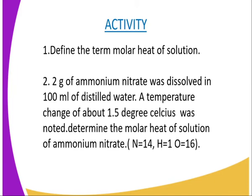So how can we check whether we have got the concept? We do that by answering the following questions. You are supposed to be able to define the term molar heat of solution. Then, from the illustration, work out this example: 2 grams of ammonium nitrate was dissolved in 100 mils of water, and a temperature change of 1.5 degrees Celsius was noted. Determine the molar heat of solution of ammonium nitrate. Given that the relative atomic mass of nitrogen is 14, hydrogen is 1, and oxygen is 16.